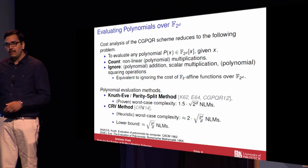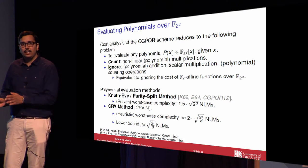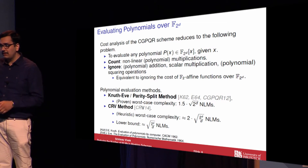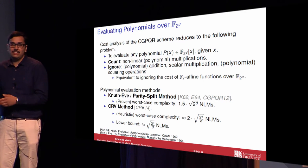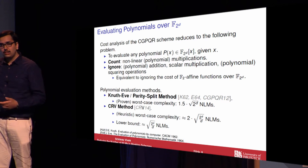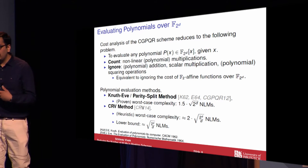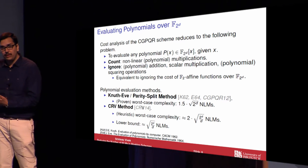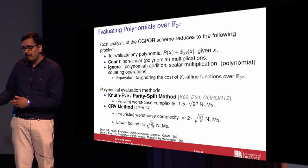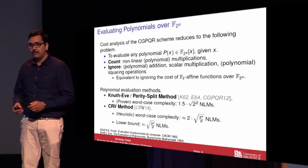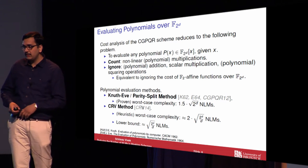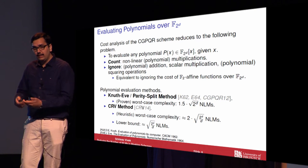The best polynomial evaluation method with respect to the non-linear multiplicative complexity cost model is the parity split method proposed by Carly and others, which in turn is based on a method by Knuth and Eve. The worst-case complexity of this method is of the order square root of 2 power D number of non-linear multiplications. At CHES 2014, Coron, Roy, and Vivek proposed a heuristic method with a better asymptotic complexity of square root of 2 power D over D number of non-linear multiplications, and they also show that it is asymptotically optimal.